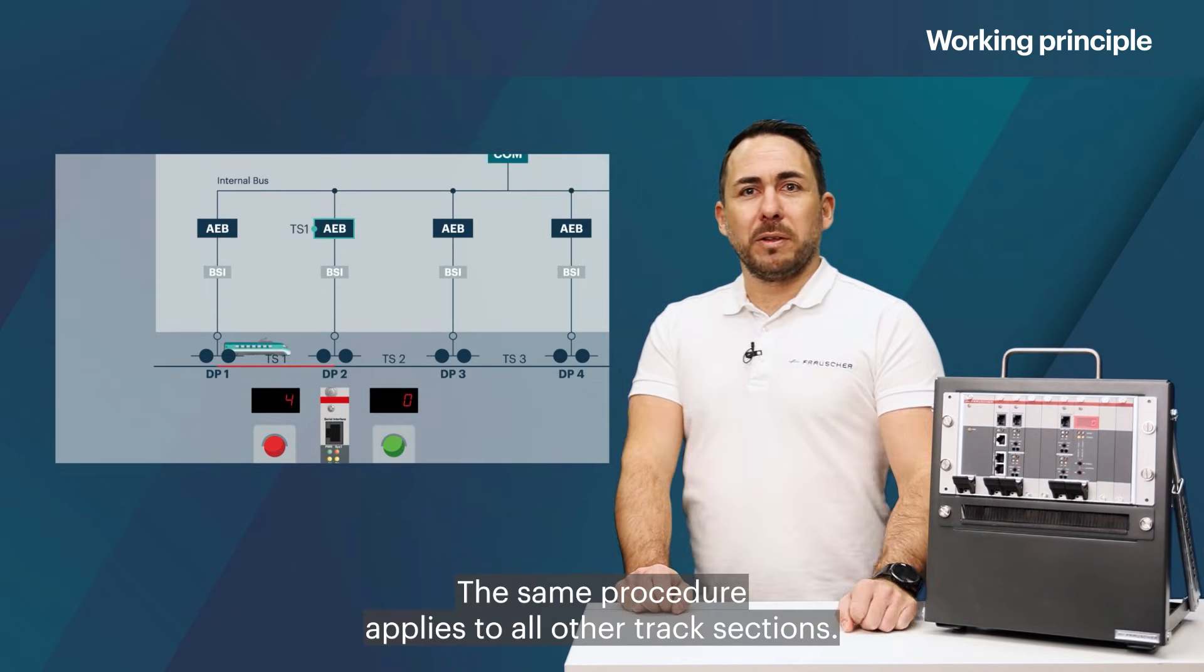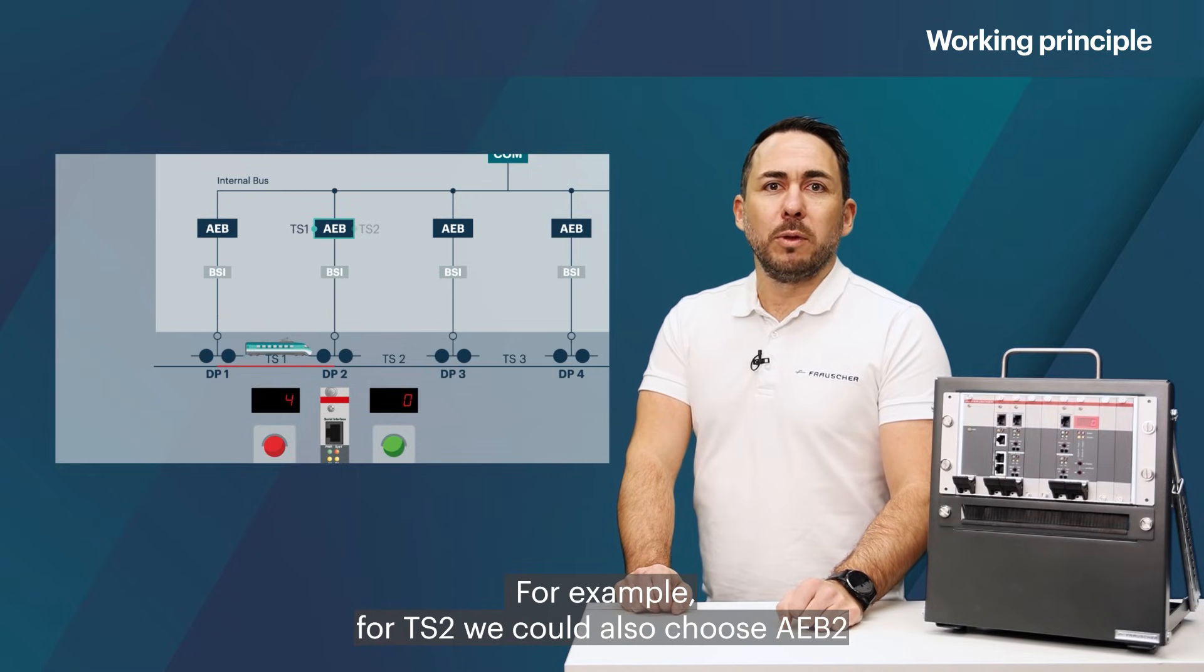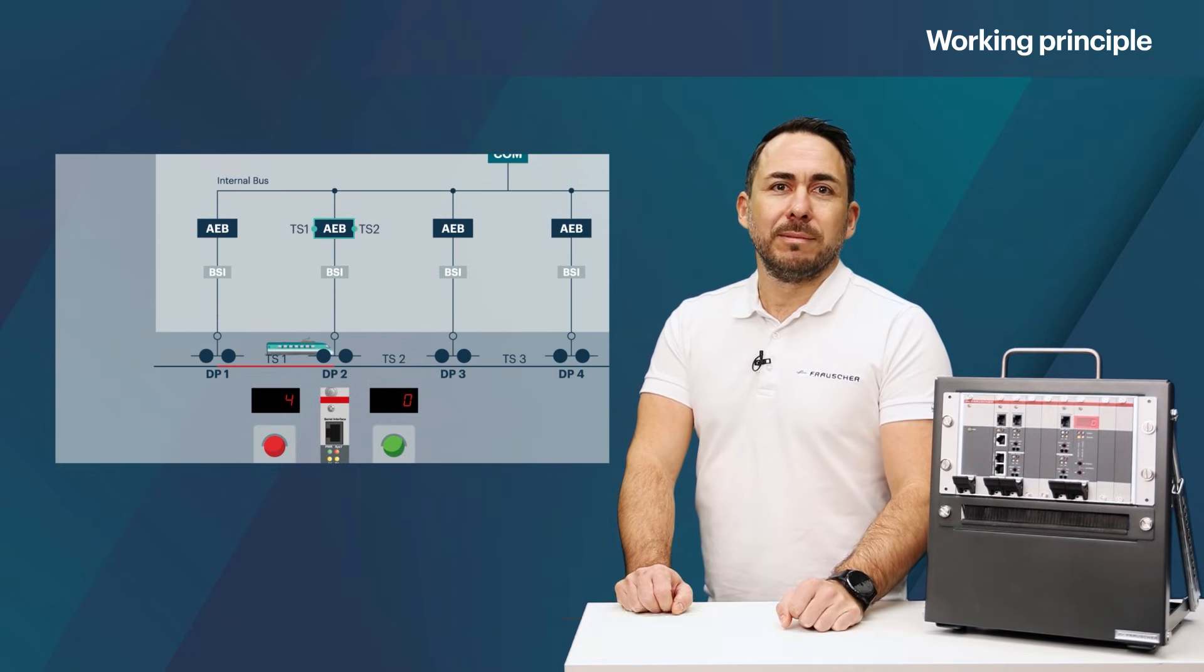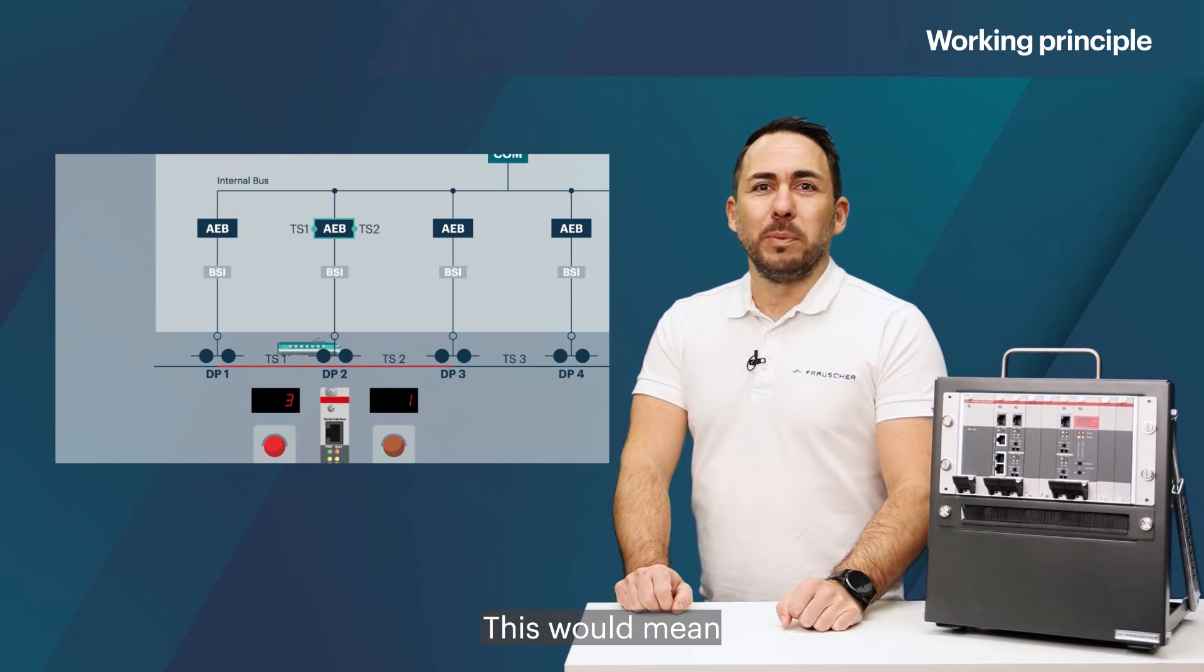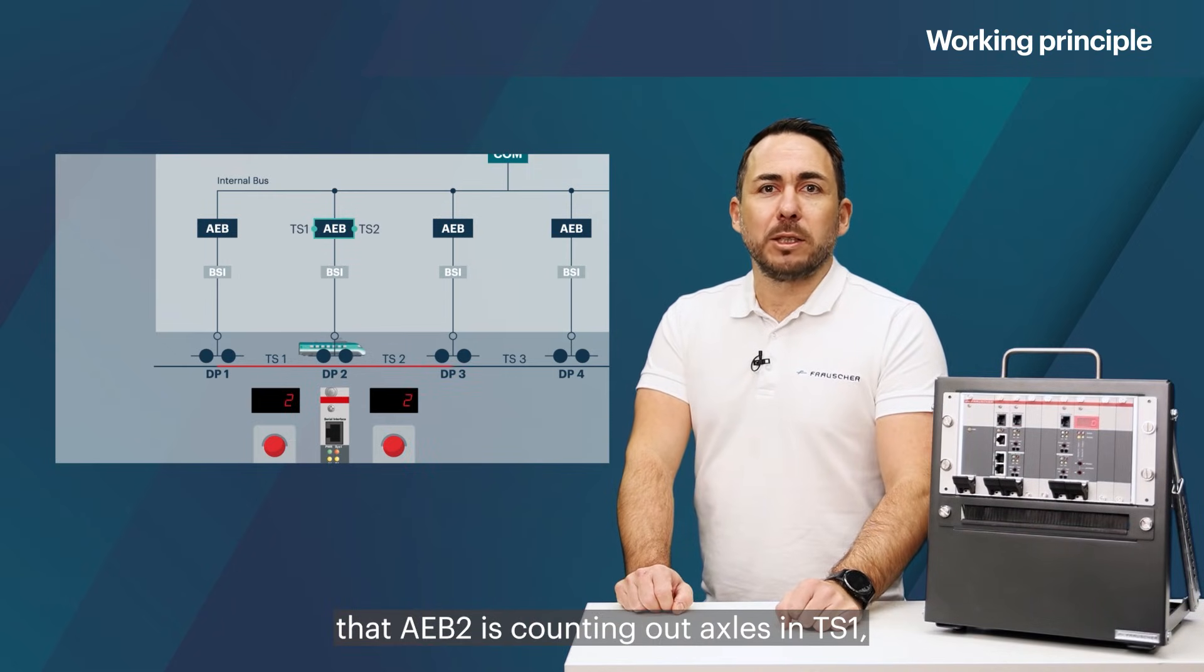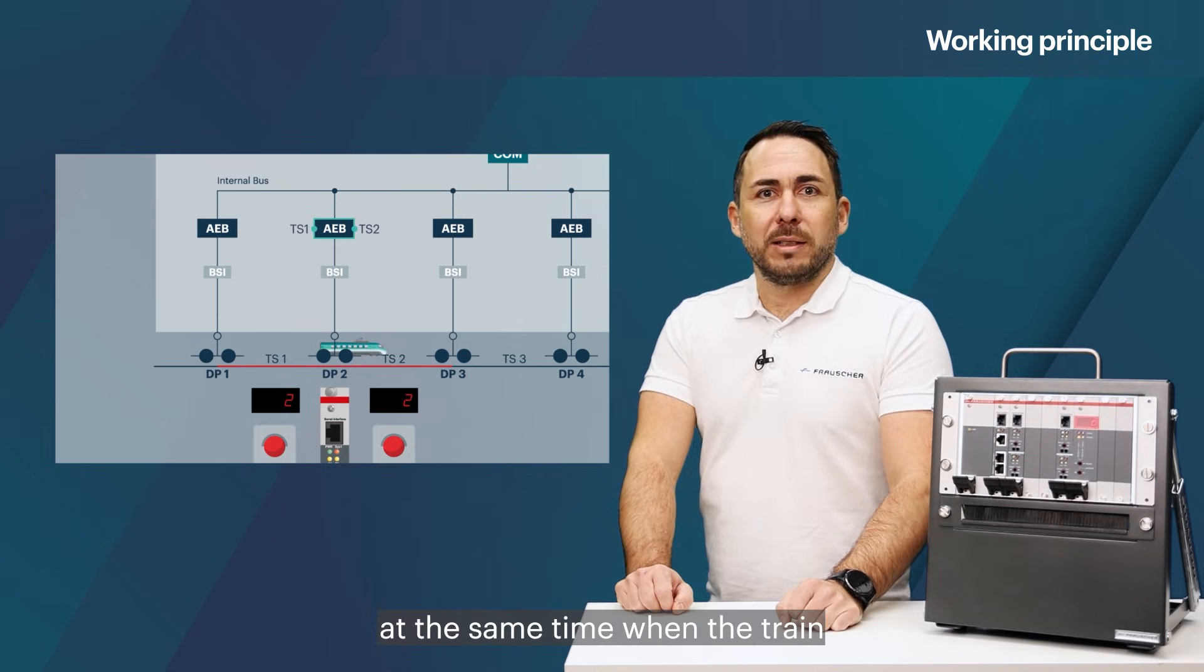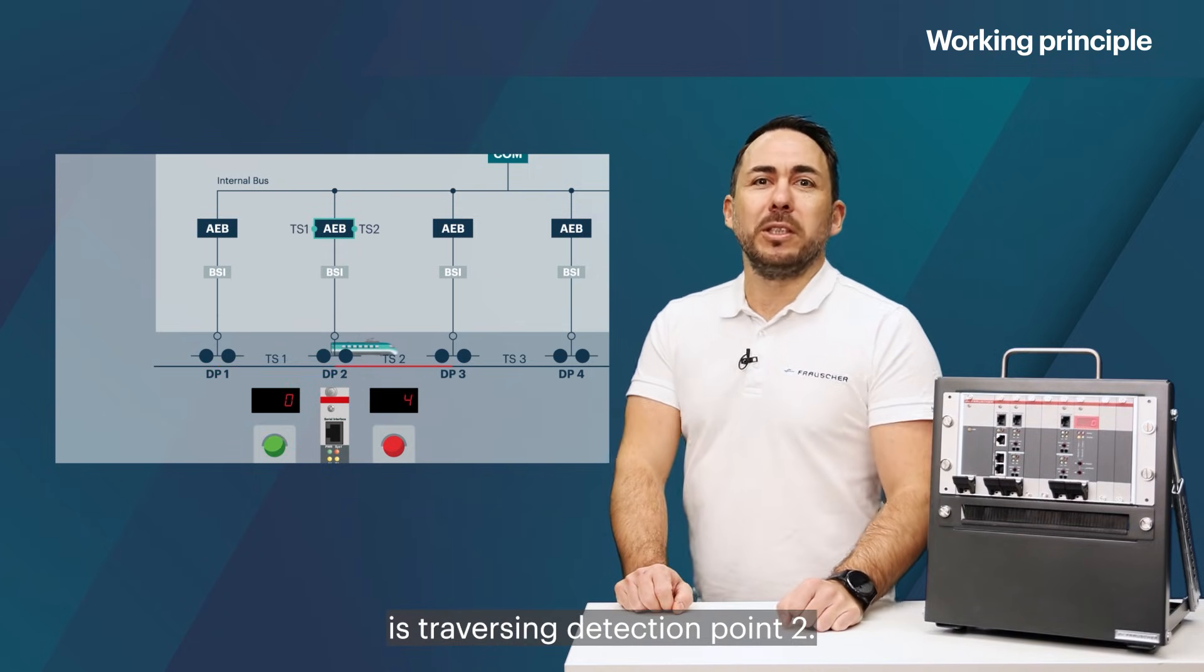The same procedure applies to all other track sections. For example, for TS2 we could also choose AEB2 for the axle counter. This would mean that AEB2 is counting out axles in TS1 and counting them in in TS2 at the same time when the train is traversing detection point 2.